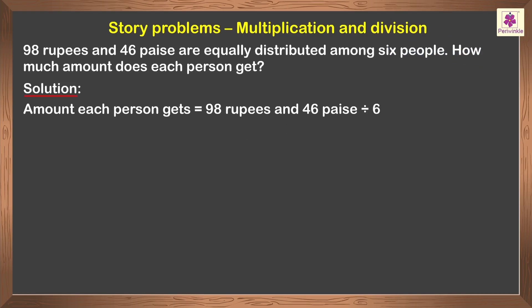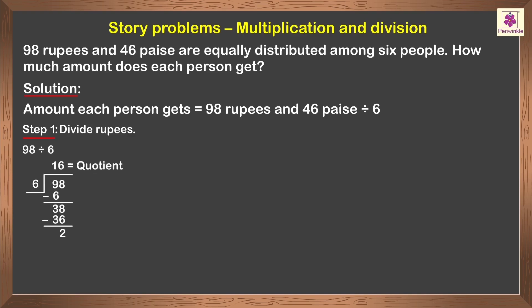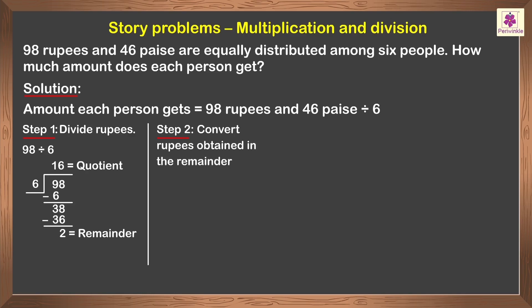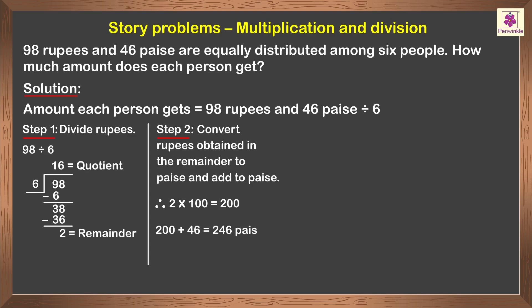Now, to find the answer, let us follow a few steps. Step 1: Divide rupees. On dividing 98 by 6, we get 16 as quotient and 2 as remainder. Step 2: Convert rupees obtained in the remainder to paise and add to paise. So, 2 multiplied by 100 is equal to 200, and 200 plus 46 is equal to 246 paise.